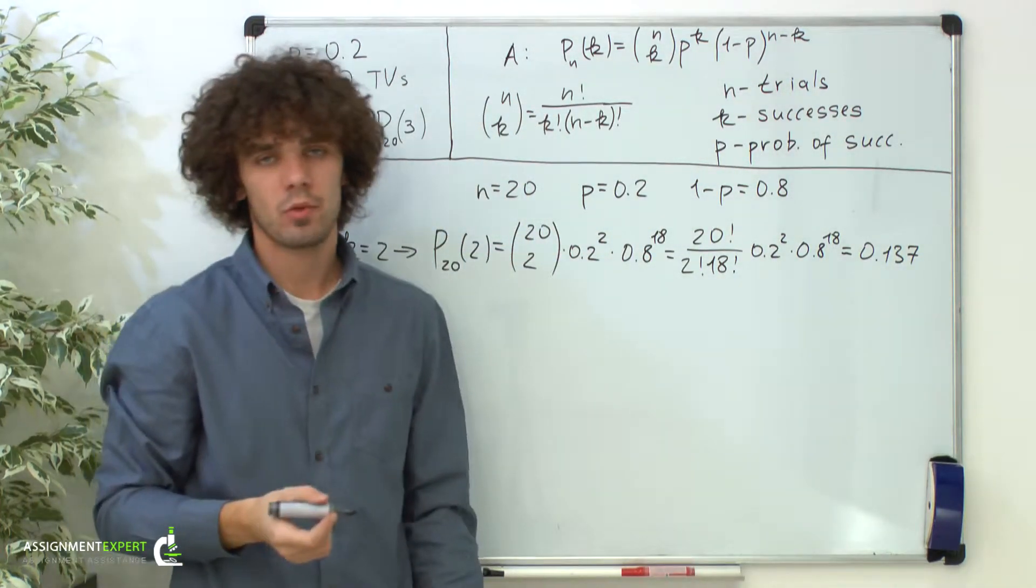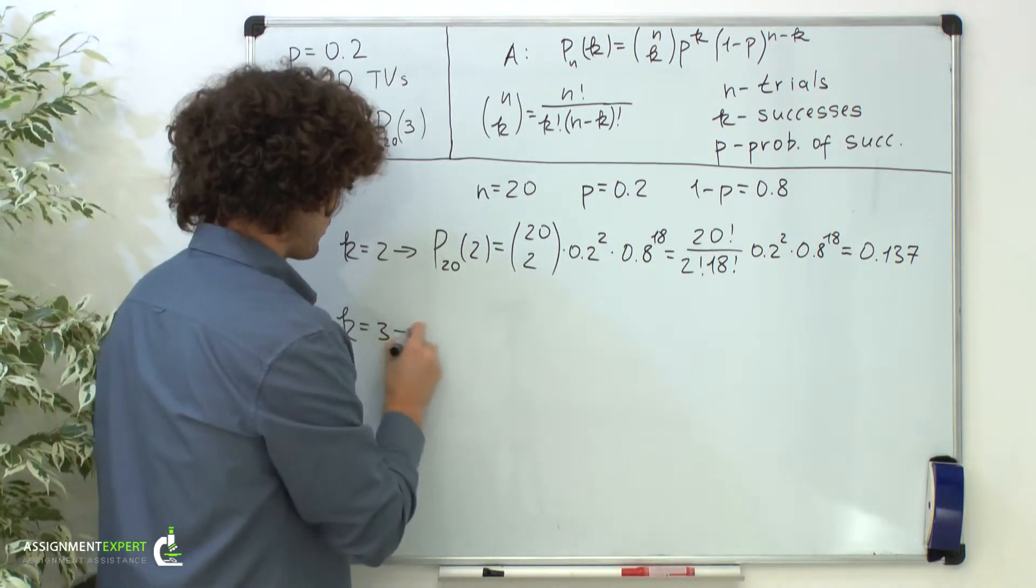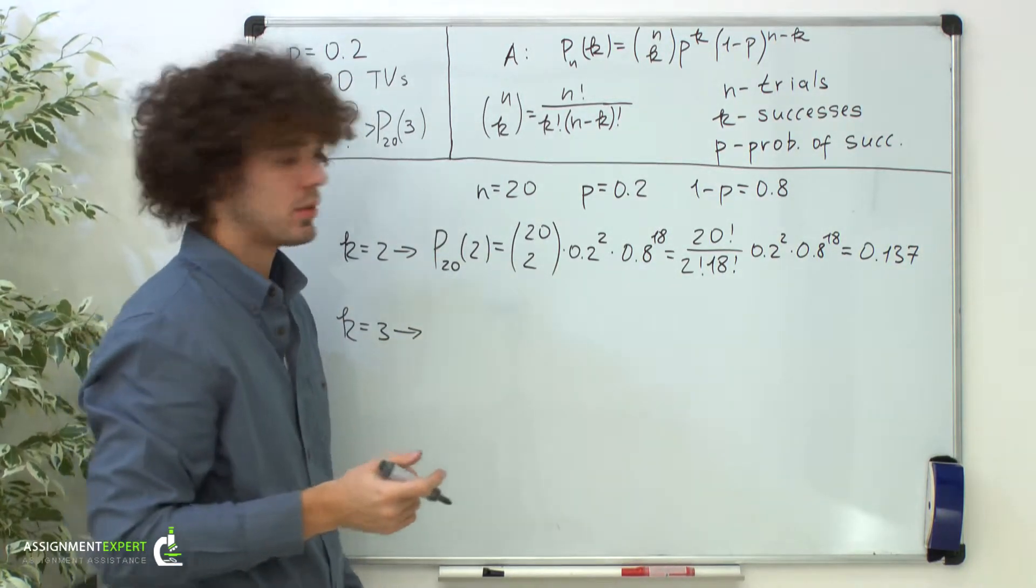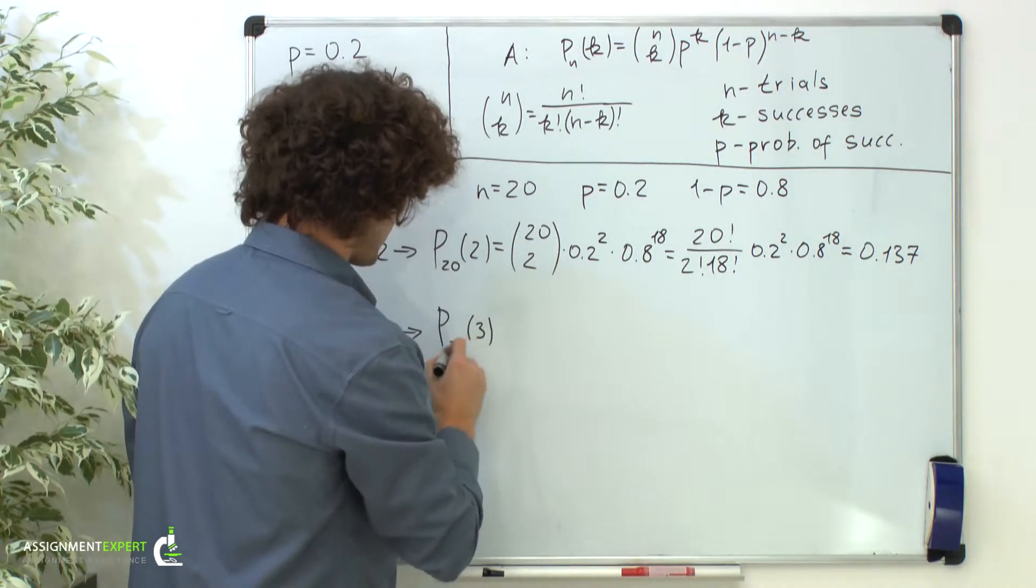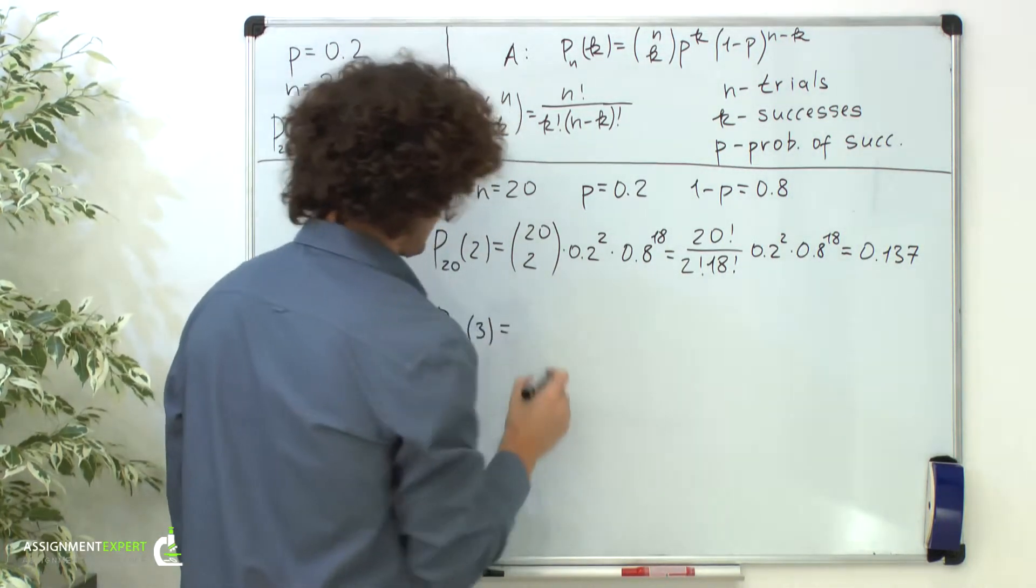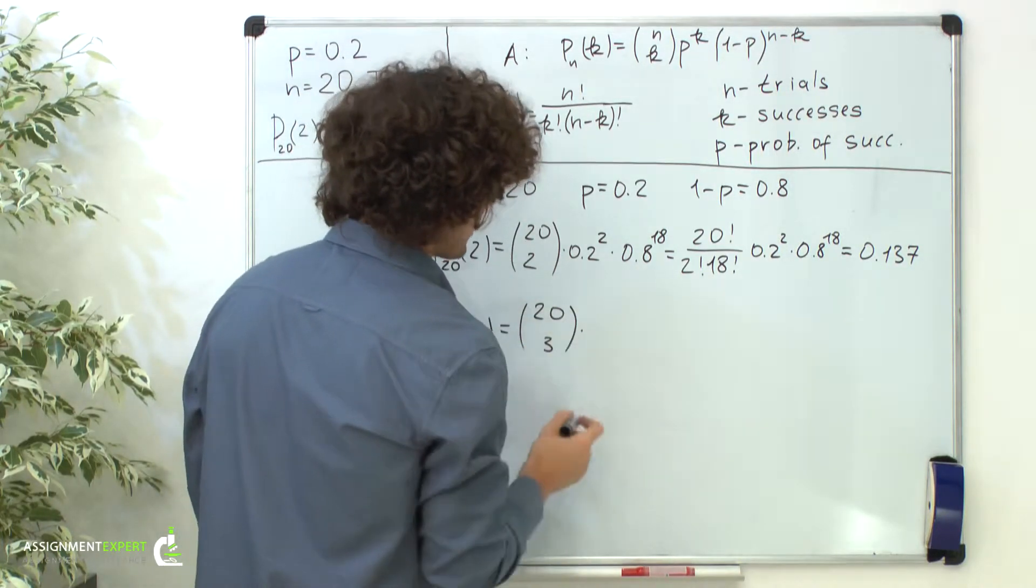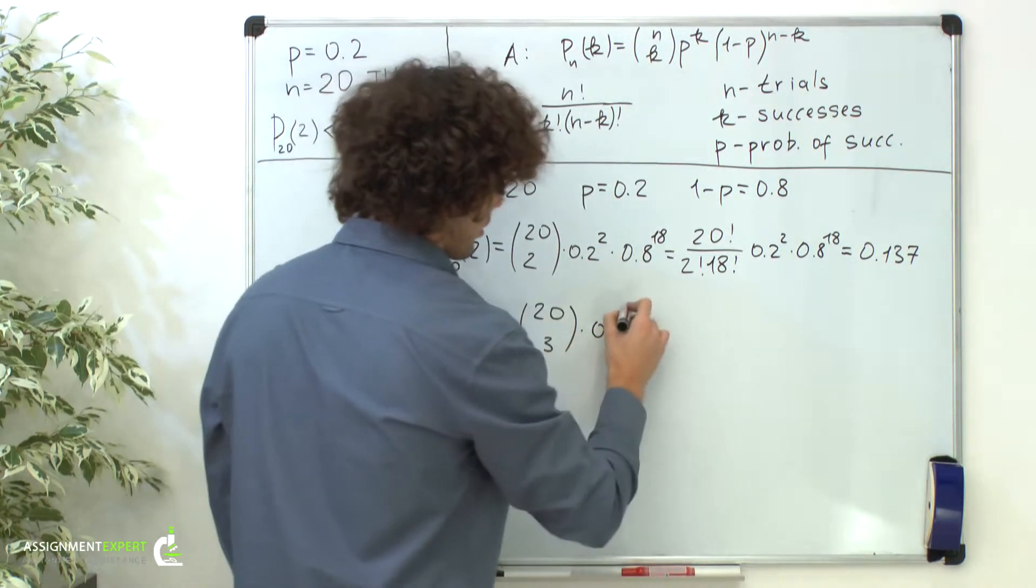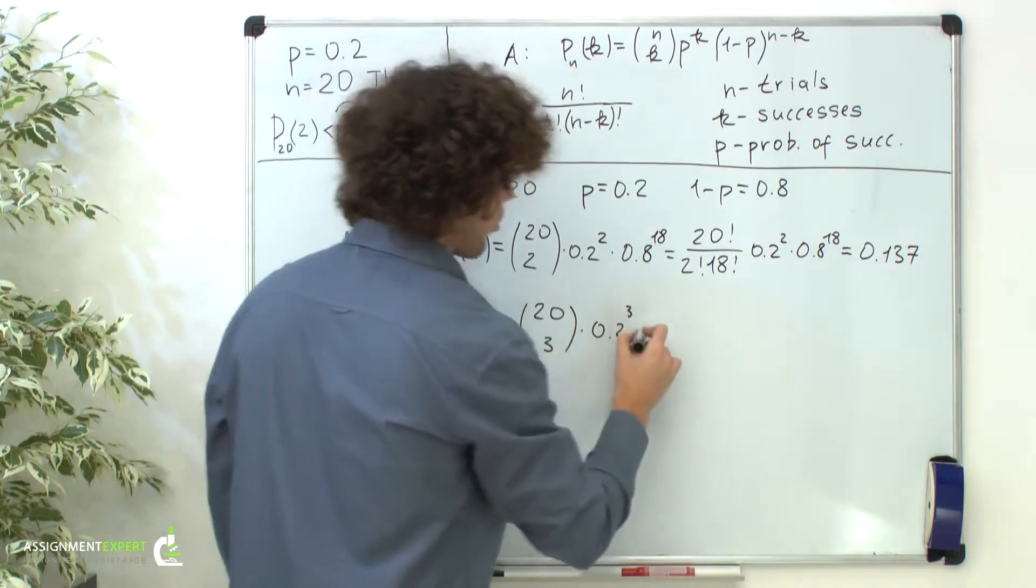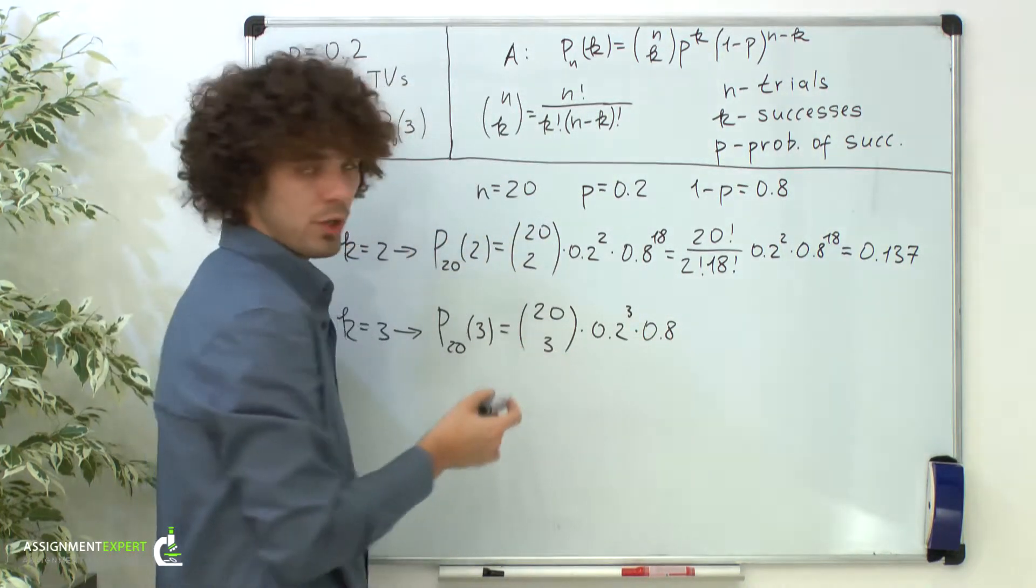Now let's find the second probability when k equals 3, so there are three defective TVs. P of 3 out of 20 equals 20 choose 3 times 0.2 cubed times 0.8 raised to the power of 20 minus 3, which is 17.